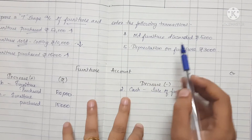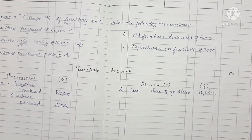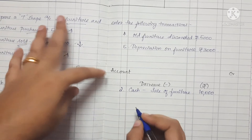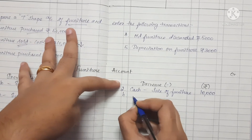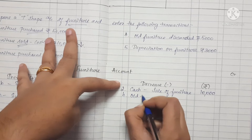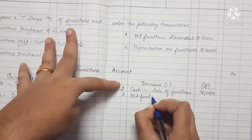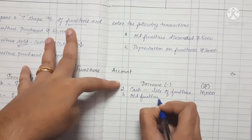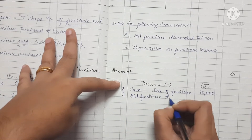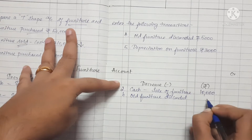Old furniture is discarded. When furniture is discarded, it is removed from the books. Old furniture is discarded and the amount is Rs. 5,000. This goes on the Credit side as a decrease.